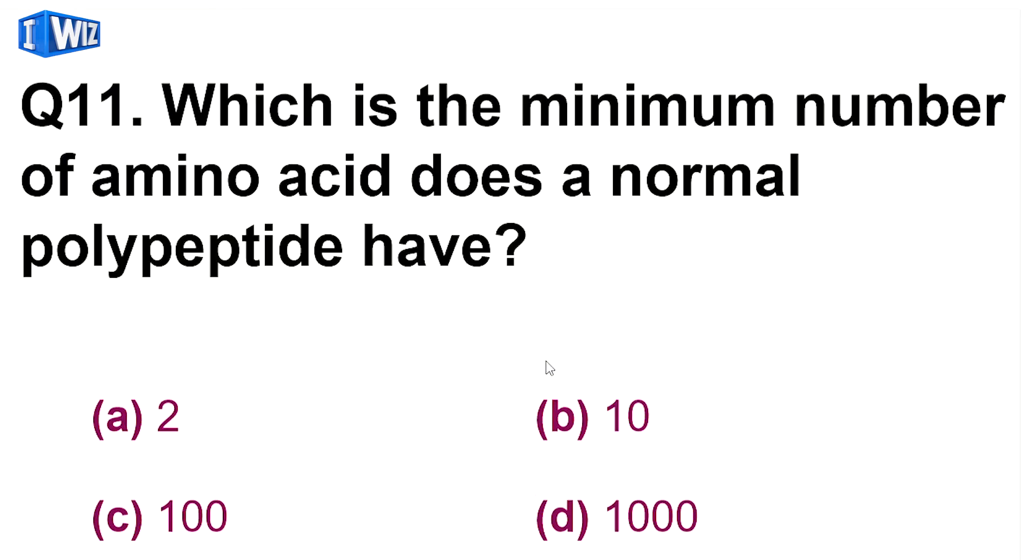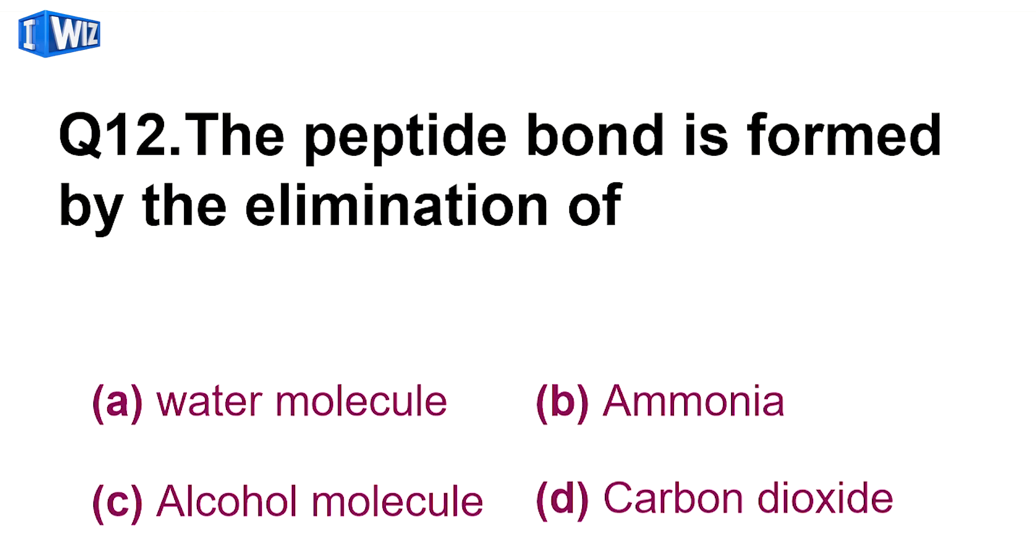Next is, which is the minimum number of amino acid does a normal polypeptide have? So minimum number jo polypeptide mein ho sekta hai amino acid ka, that is 100. 100 se zahada hooga, toh wo protein maani jaati hai. There is an exception to it, which is insulin, which just has 51 amino acids, still it is considered as a protein. But wo molar mass pe bhi depend kerta hai, ki molar mass 10,000 ke around ho na chahiye. So C is the correct answer, 100 is the number.